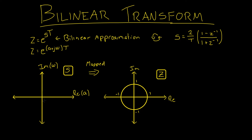Let's test that with a few points in the s-plane. Firstly, let's take the point 0, 0. This point has a value of 0 in the real axis plus 0j in the imaginary axis. If we substitute this into our bilinear approximation, we can see that we would have z is equal to e to the power of 0 plus 0 times t. The sampling period doesn't actually impact the mapping, so we'll say t equals 1, which leaves us with e to the power of 0, which is a value of 1 in the real axis. Therefore this point maps to this point on the real axis in the z-plane.